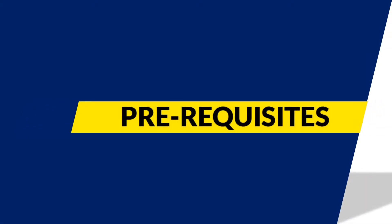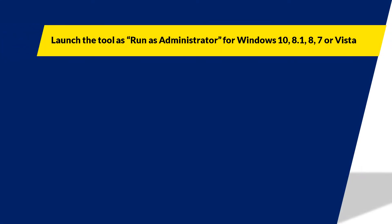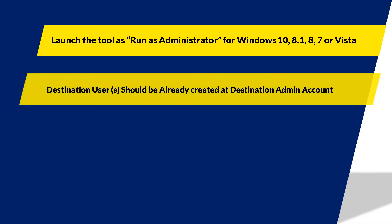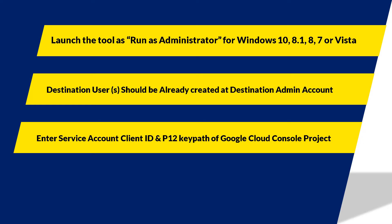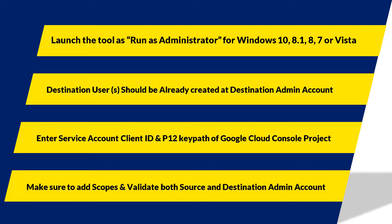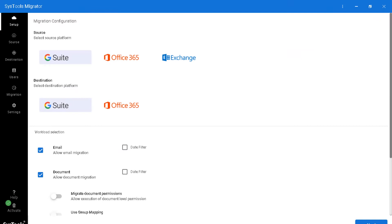Now let's check out the prerequisites before installing the software. If you are using any of the Windows versions mentioned, please launch the tool as run as administrator. Destination users should already be created at the destination admin account. Make sure that you enter the service account client ID and P12 key path of the Google Cloud console project correctly, and also make sure to add scopes and validate both source and destination admin accounts.